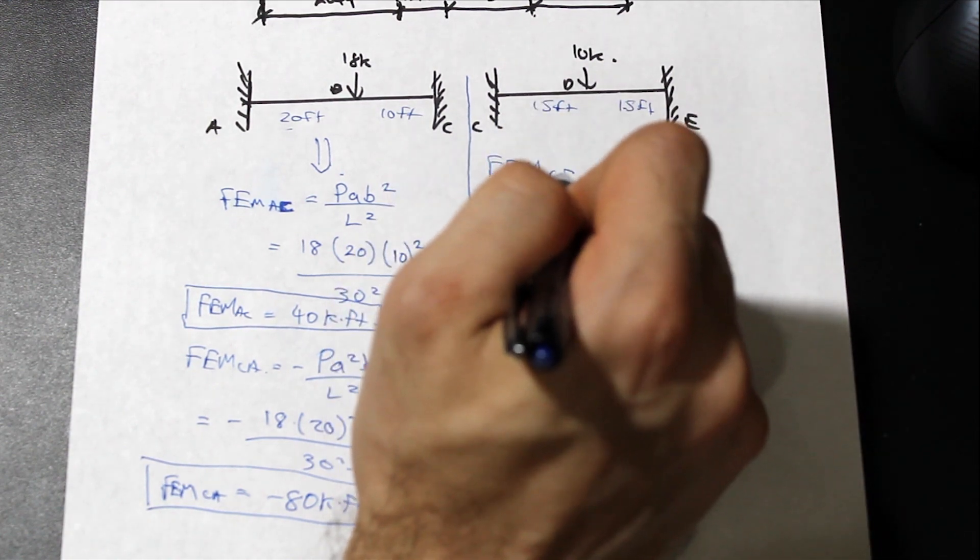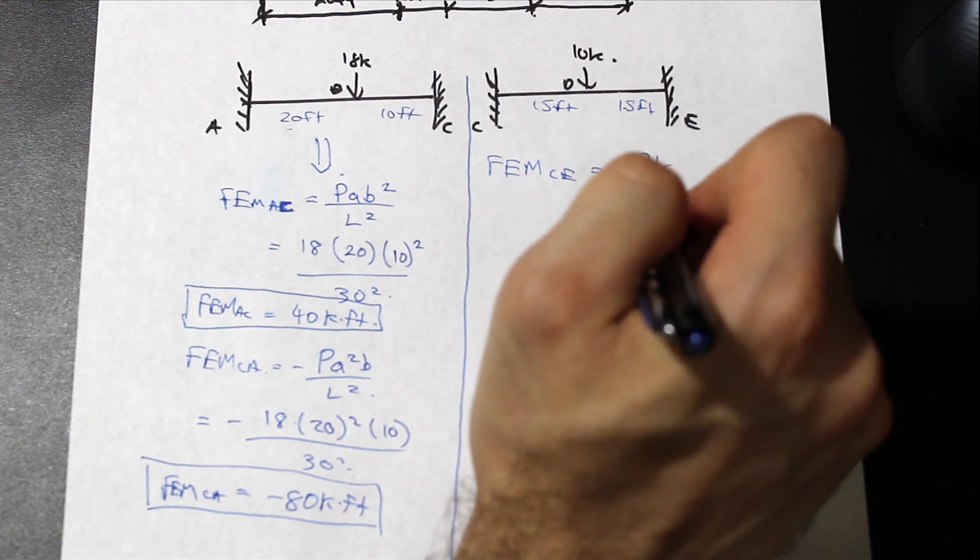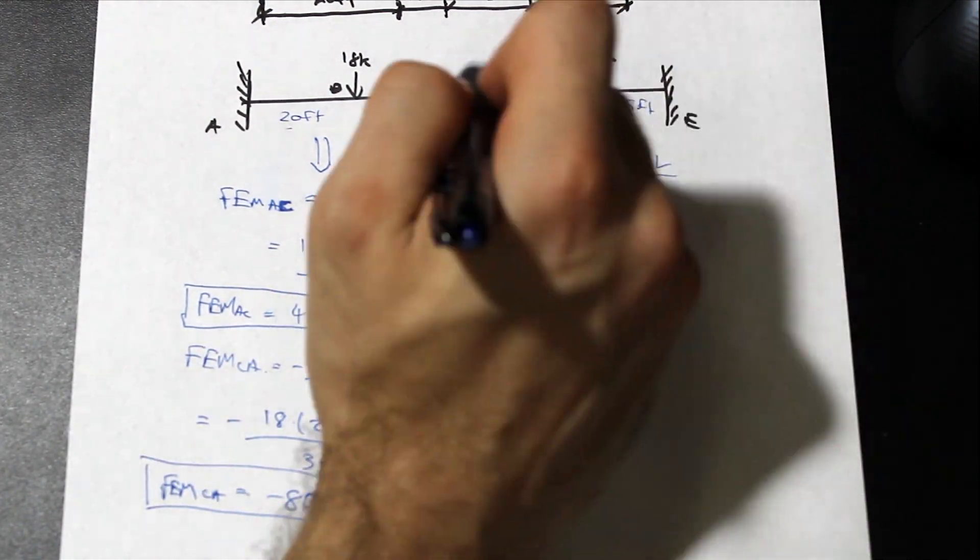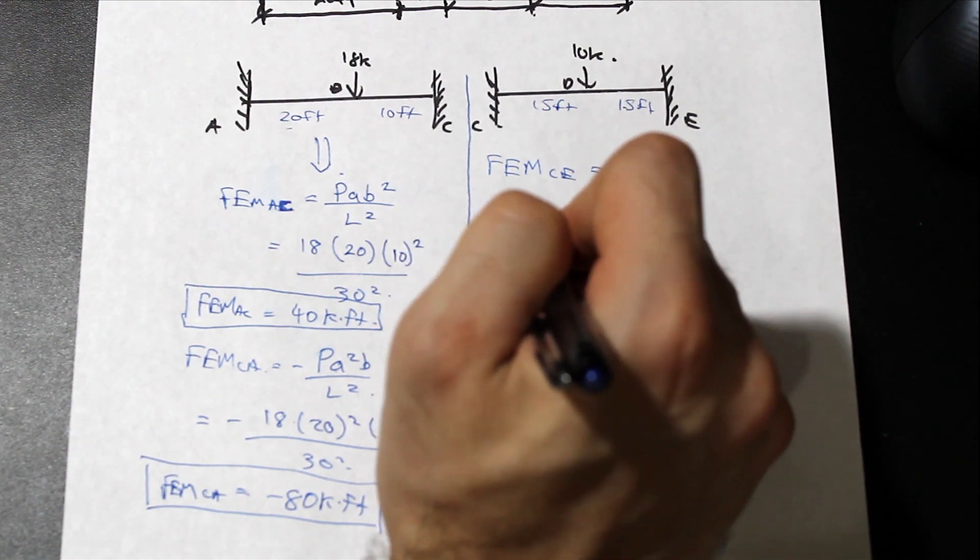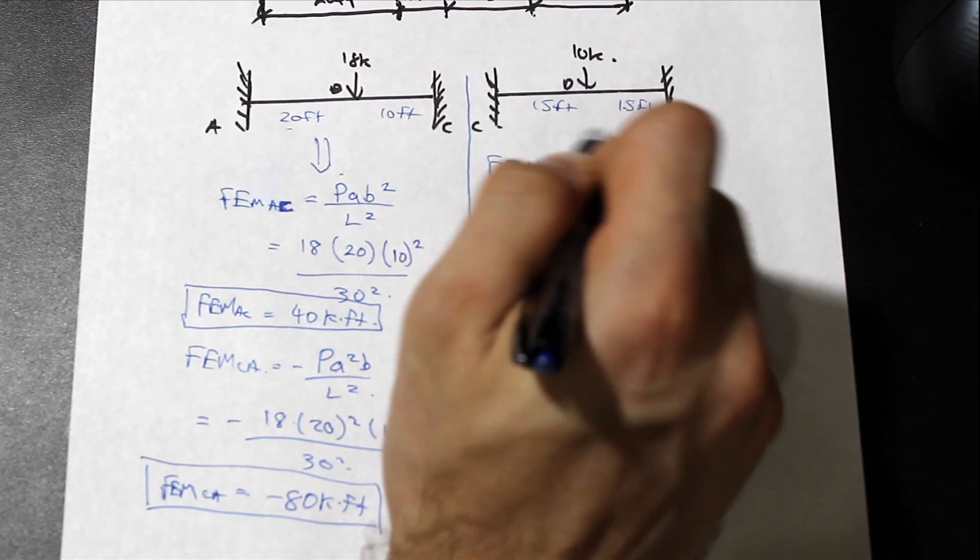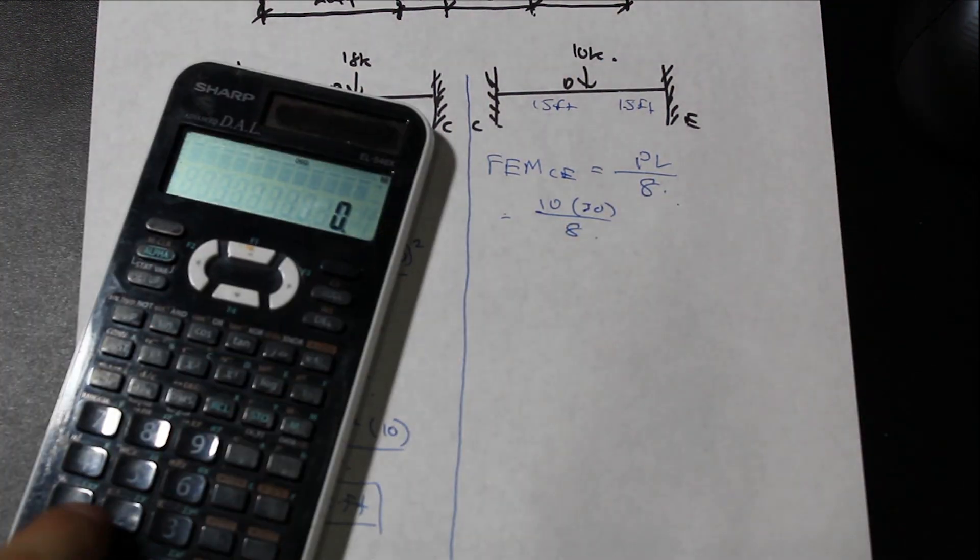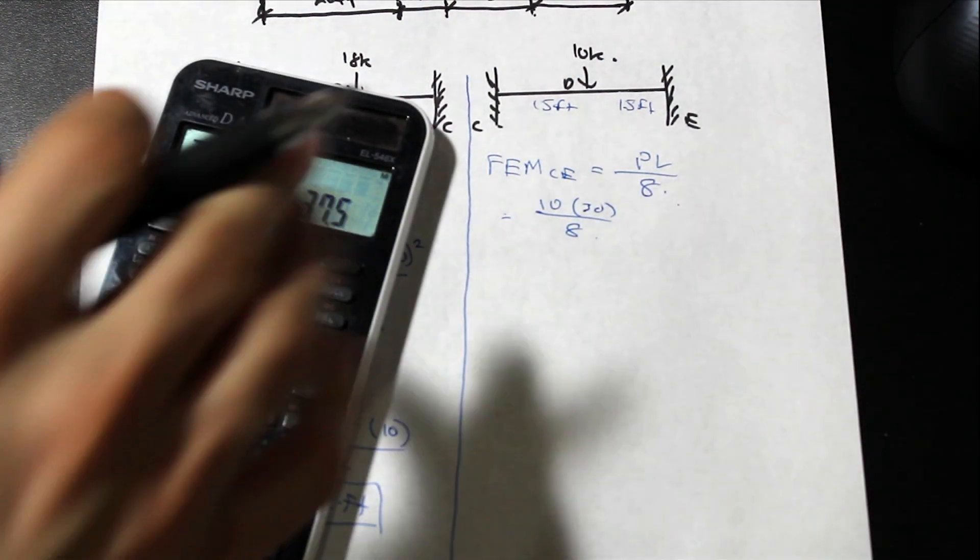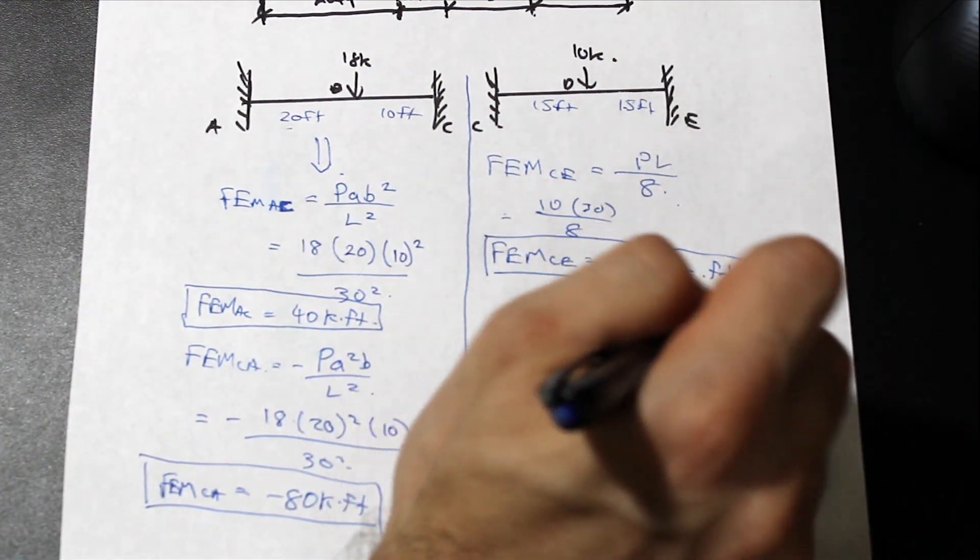So let's do the fixed end moment for CE, and that's just simply going to be PL over 8. That's going to be a positive moment. So let's go ahead and plug in. We have 10 times the full length which is 30 over 8. That's going to give us a value of 37.5.